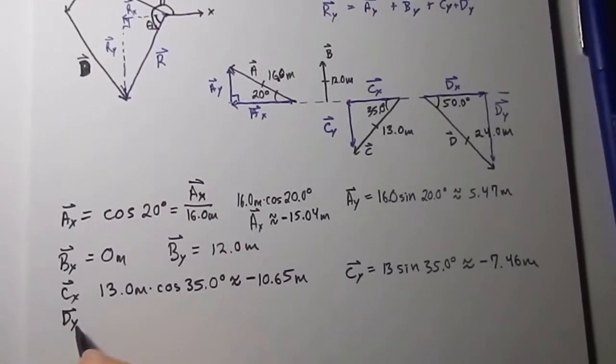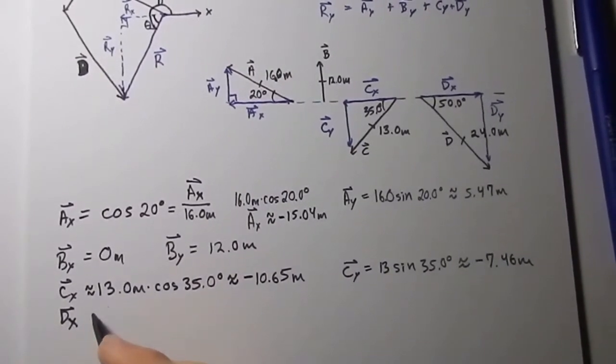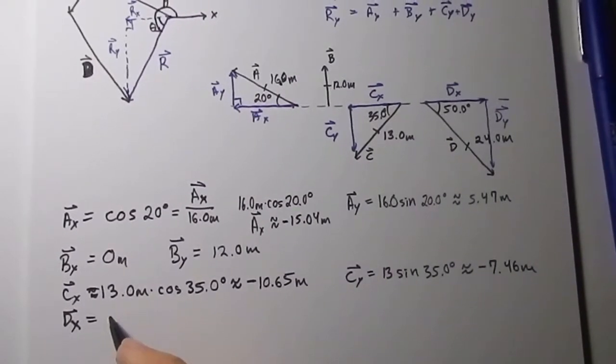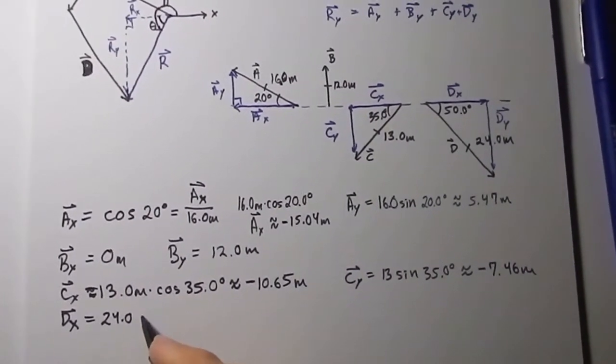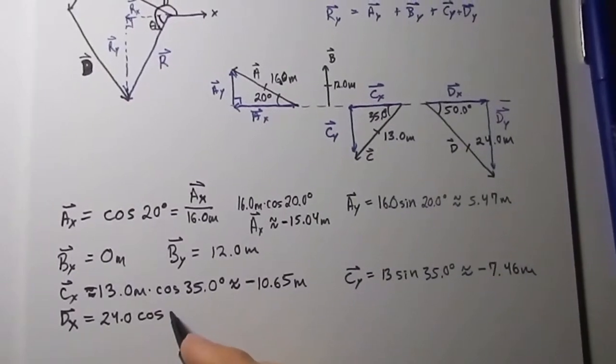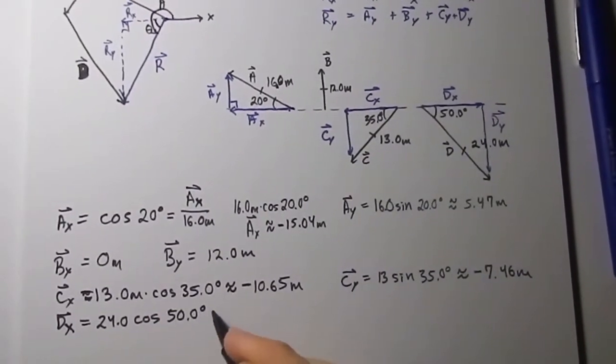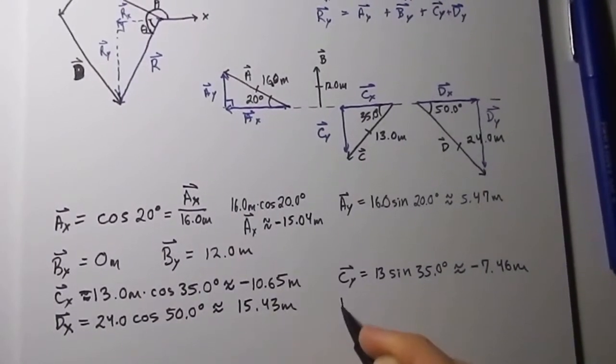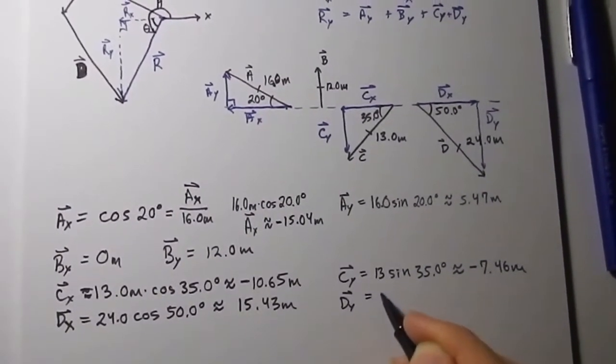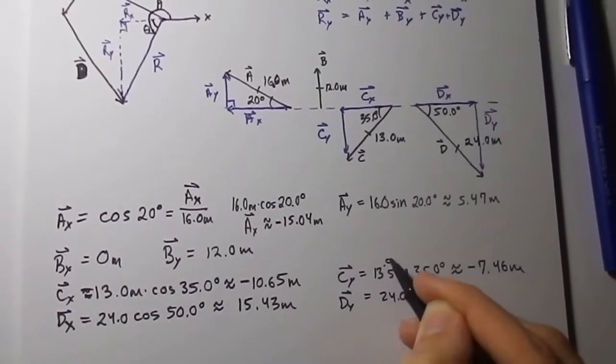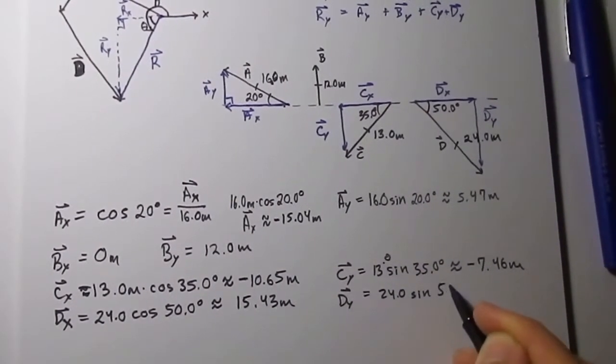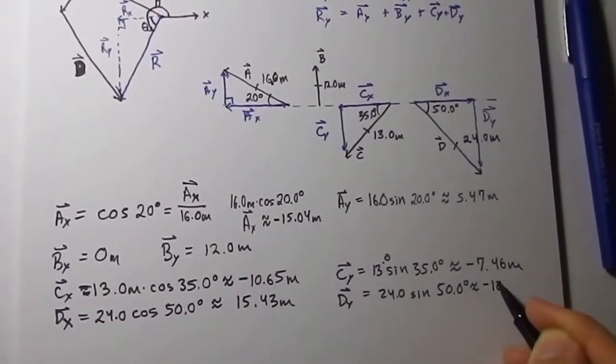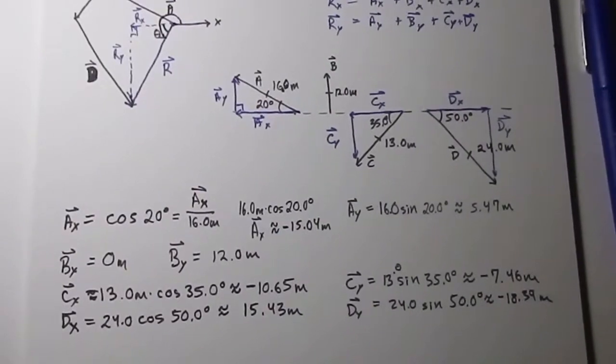And then the x-component of vector D equals 24.0 cosine 50.0 degrees. I hope by now you understand how I got that, which is 15.43 meters. And the y-component is 24.0 sine 50.0 degrees, approximately negative 18.39. I hope you understand how I got the negative by now.